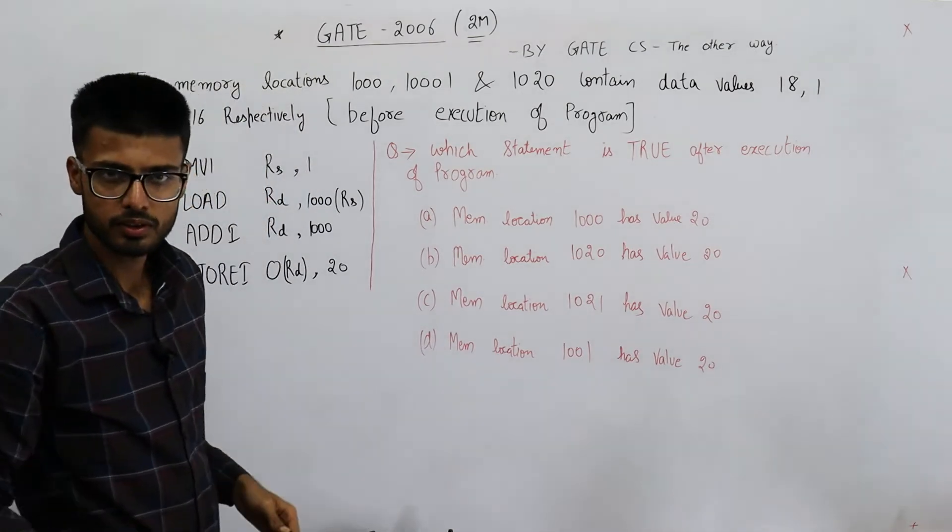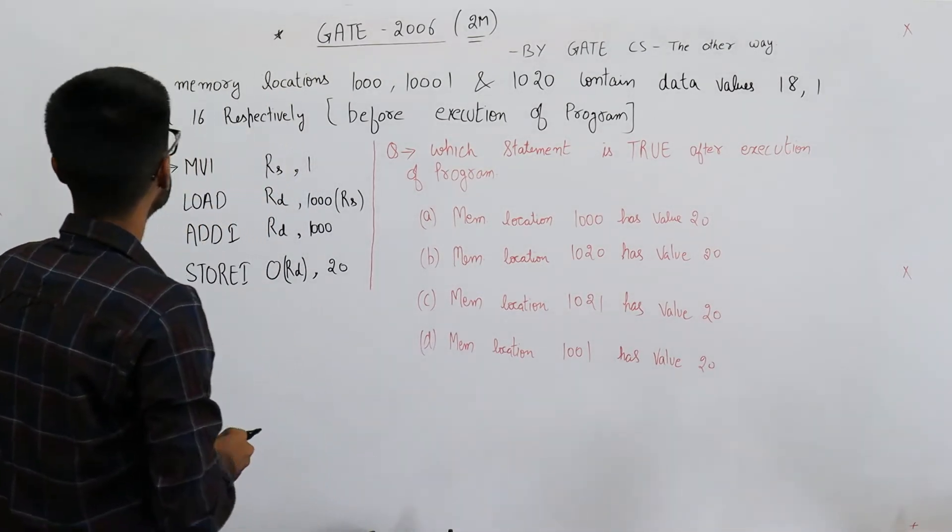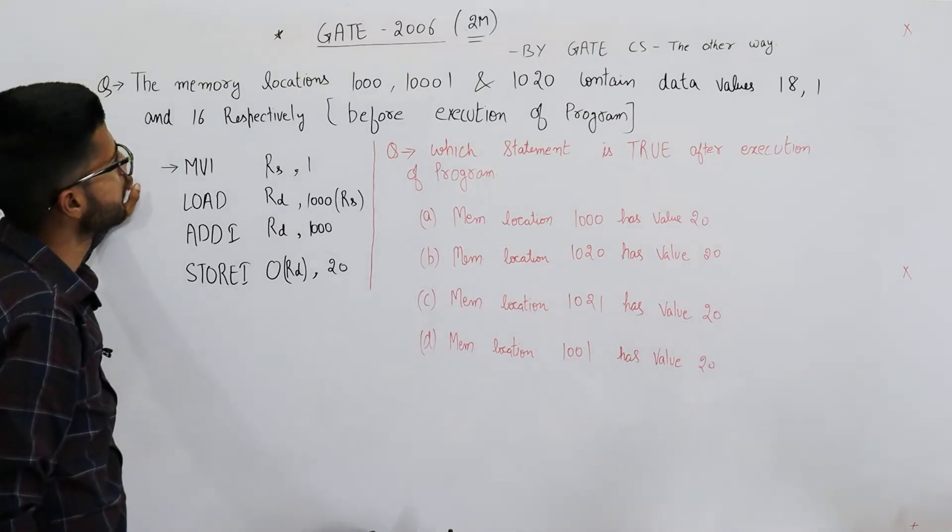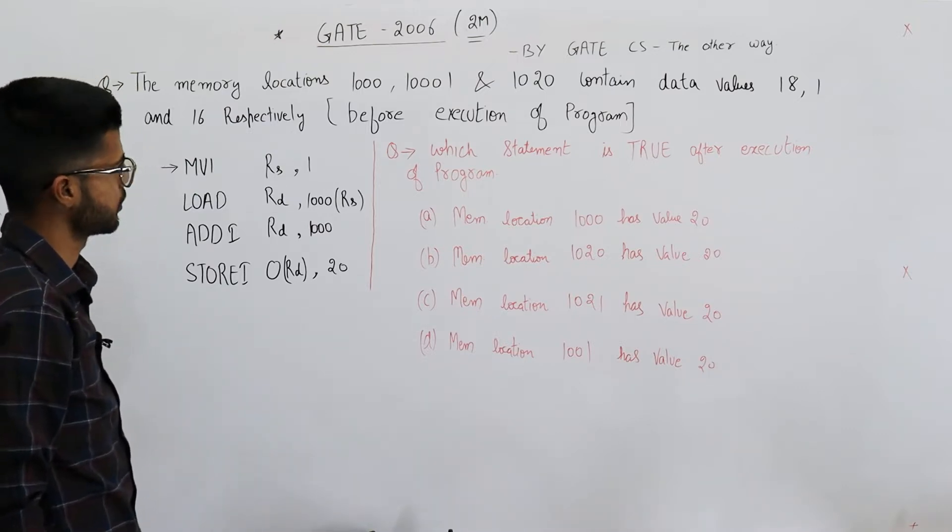This is a GATE 2006 question asked for two marks. The memory locations 1000, 1001, and 1020 contain the data values 18, 1, and 16 respectively before execution of the program.